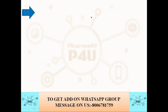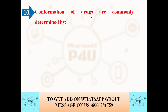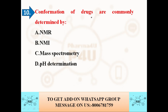The last question is: confirmation of drugs is commonly determined by which method — option A: NMR; option B: NMI; option C: mass spectrometry; option D: pH determination. The correct answer is NMR — nuclear magnetic resonance is used for the confirmation of drugs. I hope you liked the video; please subscribe and hit the bell icon for more updates. We are coming with analysis, microbiology, and pharmaceutical lectures, so please subscribe. Thanks for watching.